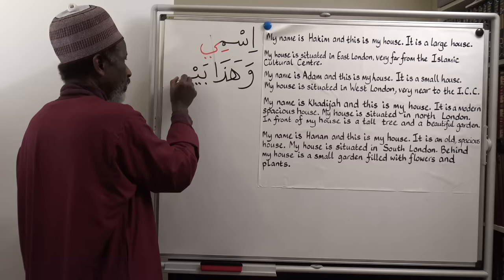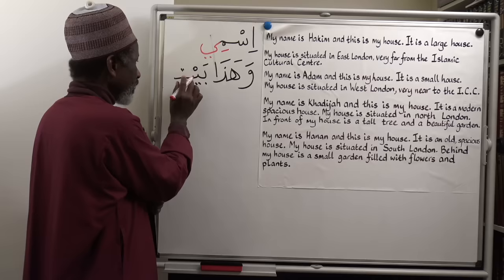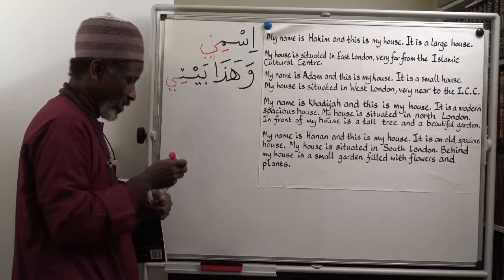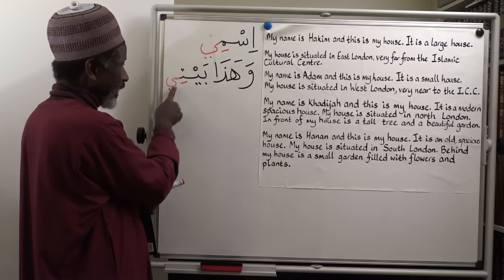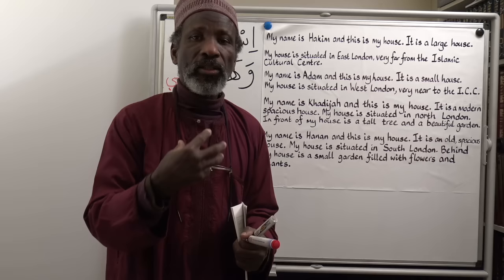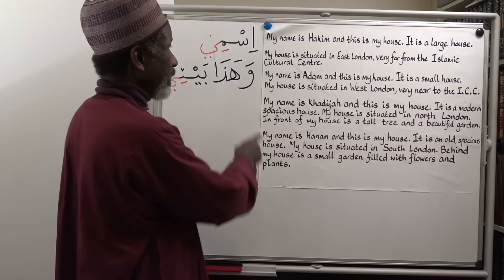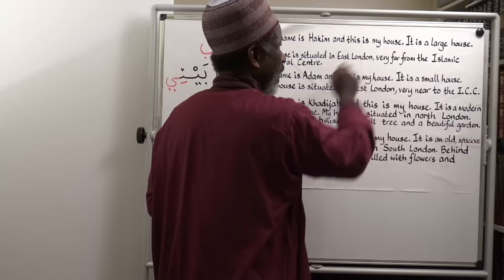Bayti — my house. It starts from Bayt. We put Kesara under the last letter and then lengthen it with the lengthening yaa: Bayti. Wahadha bayti — and this is my house. There is no gender distinction when you say 'my': a male and female will say it the same way.